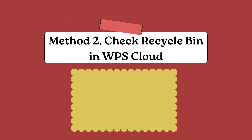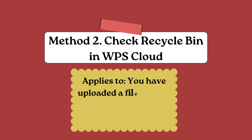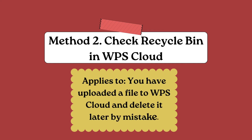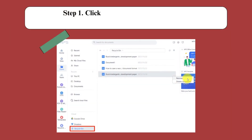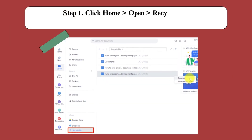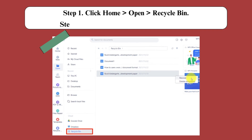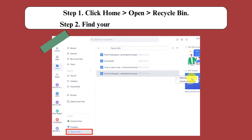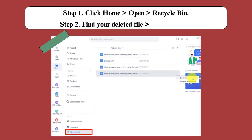Right-click on it and choose Restore. Method 2: Check the Recycle Bin in WPS Cloud. This applies when you have uploaded a file to WPS Cloud and deleted it by mistake. Step 1: Click Home, Open, and Recycle Bin. Step 2: Find your deleted file and click Recover. Step 3: Go back to My Cloud Files to regain the file.